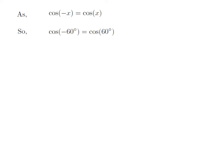Let us apply the above identity for cosine of minus 60 degrees. Here, x is 60 degrees. So cosine of minus 60 degrees is equal to cosine of 60 degrees.